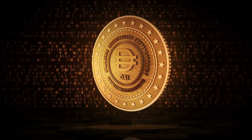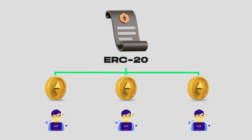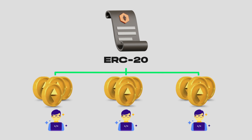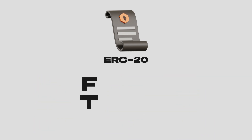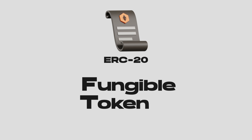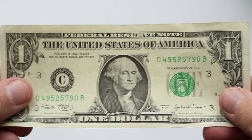An ERC-20 contract can have millions of tokens, and these get distributed to owners. You can own multiple tokens, and all the tokens have the same value — they are interchangeable. This makes ERC-20 tokens fungible tokens, or FTs. You can exchange them one for one, just like a fiat currency.